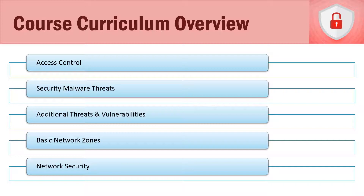You're going to learn about all the different types of malware threats that exist. Then in section eight, we talk about additional threats and vulnerabilities. Malware is not our only concern — there are other threats such as social engineering, phishing, pharming, protocol spoofing, and other things we need to discuss. In section nine, we start taking a look at network security by covering basic network zones, such as a DMZ, the intranet, and an extranet.